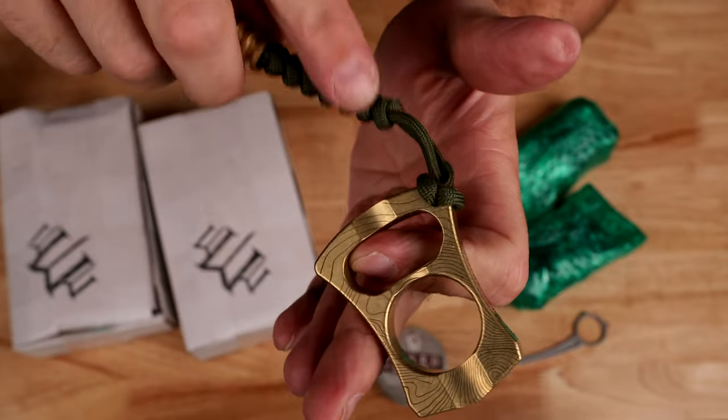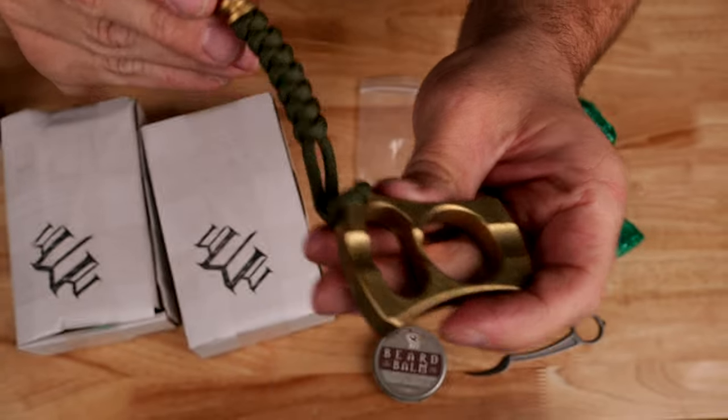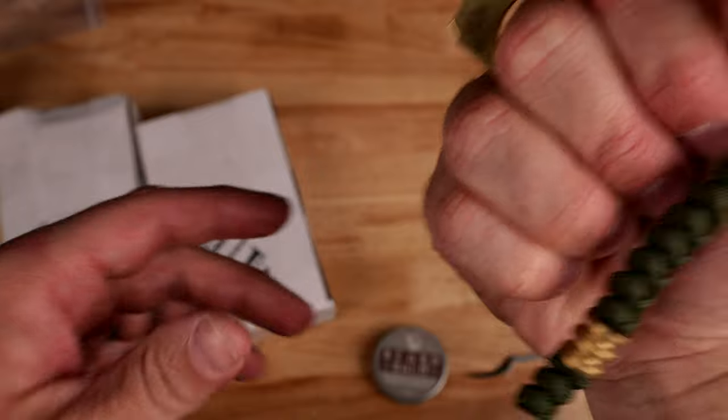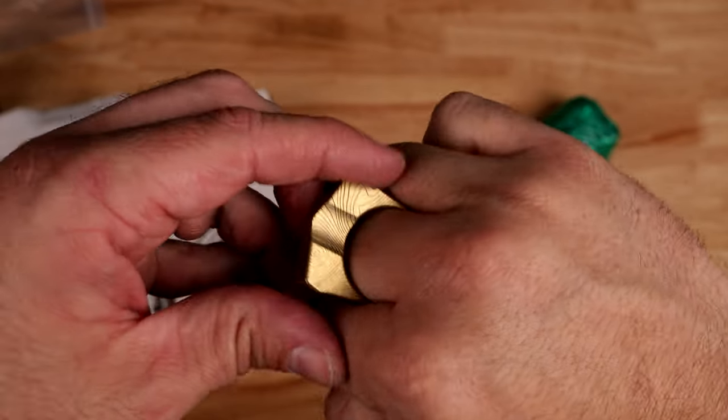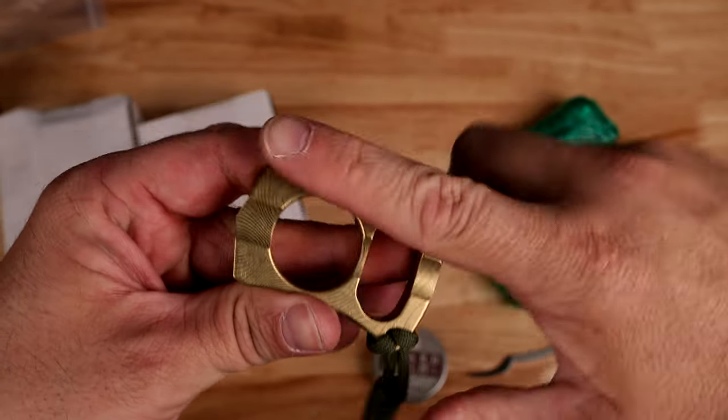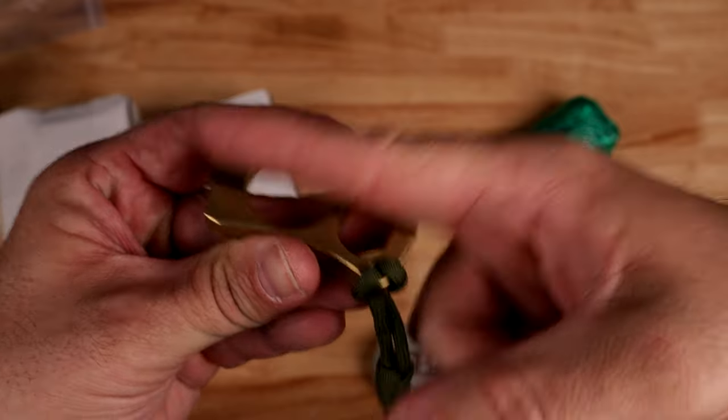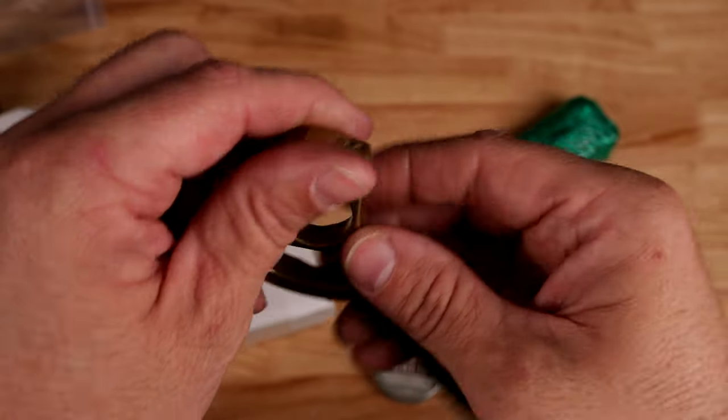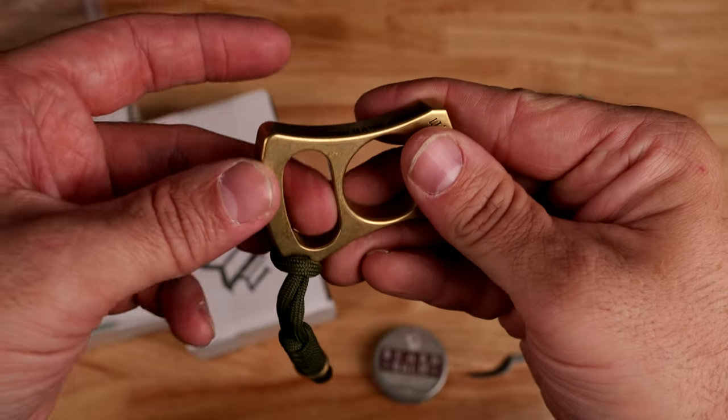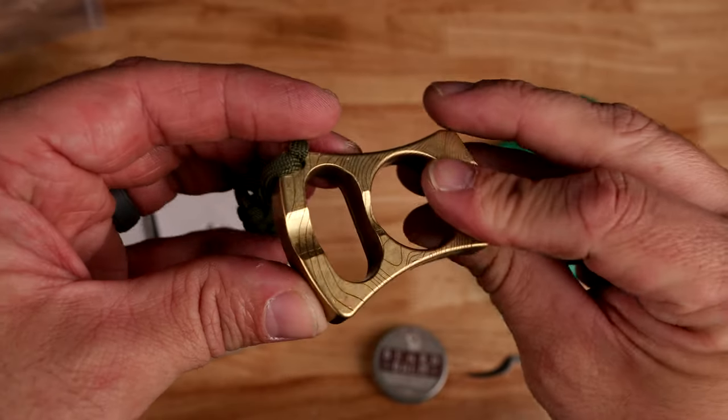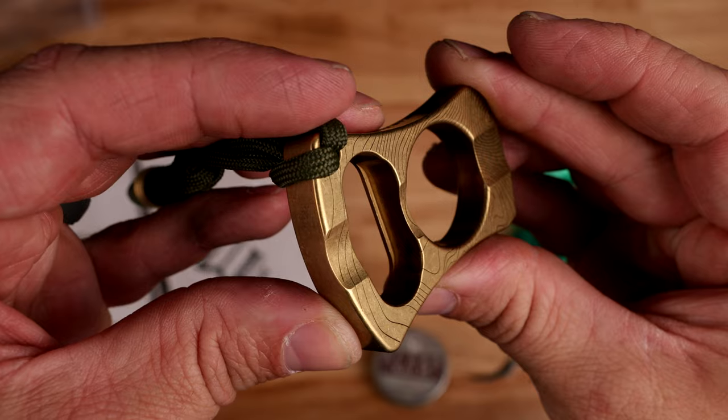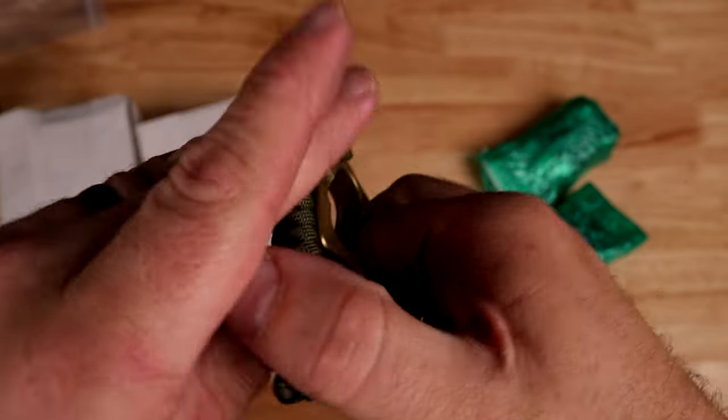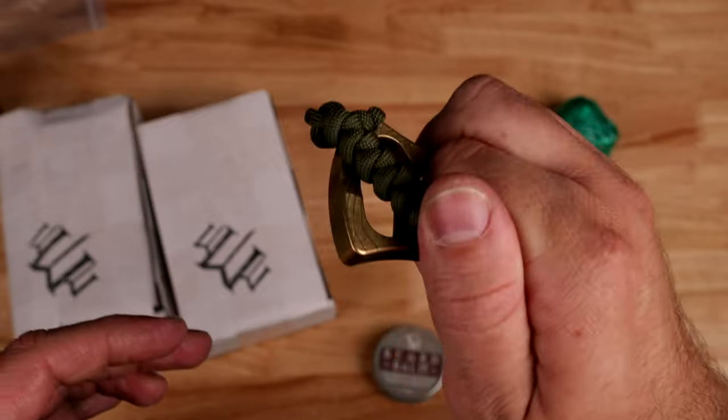Brass bead with OD green paracord and they have multiple purposes. So you can obviously hold it like this. It can lay down and you can put a cigar on it. It's a cigar holder and of course it's a bottle opener too. So you've got a ridge right here on the inside of this. You can see right there and you can use it like this and just pop the top.